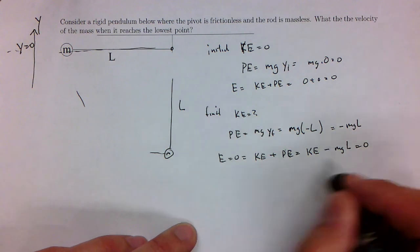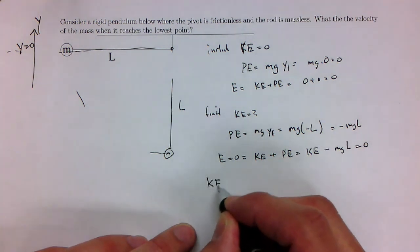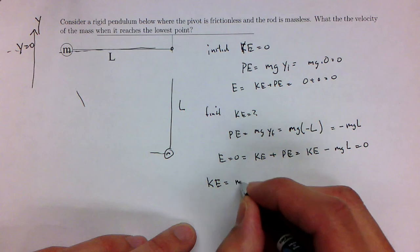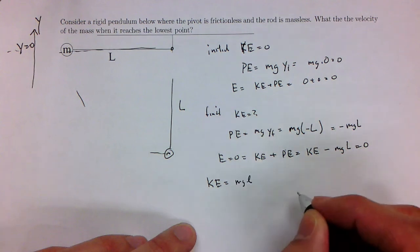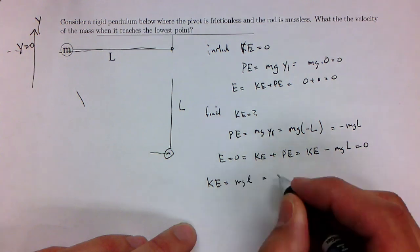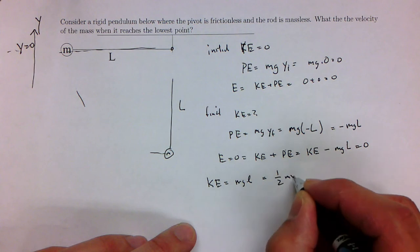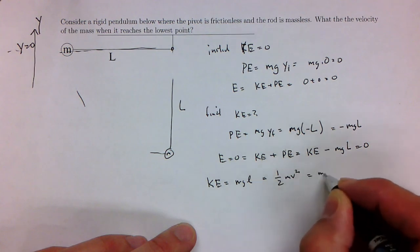So that means that I can just basically look at this equation right here. I get the kinetic energy is equal to mg L. Just basically move this to the other side. But what is kinetic energy? That's just one-half mv squared. And this is equal to mg L.